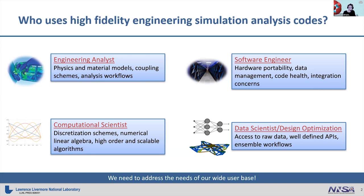There are also the software engineers — people concerned with how we get these codes onto the new machines, how we keep the code healthy, how we integrate it with other software packages. And then finally, this is kind of the new thing that came with this new generation of codes: data scientists and design optimization. They want a low-level data API to get actual simulation data to inject into a machine learning algorithm or a design optimization algorithm to answer a meta question above that. So the question became: how do we design a code framework which can satisfy all of these communities?